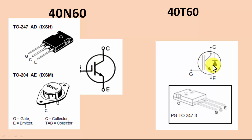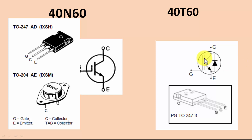Finally, we cannot replace the 40N60 with the 40T60 — or vice versa — in any push-pull or inverter topology. When the magnetic field collapses, it generates a reverse polarity voltage spike, and without the built-in diode the IGBT will take that stress and fail. We must use the correct part number for proper functioning.